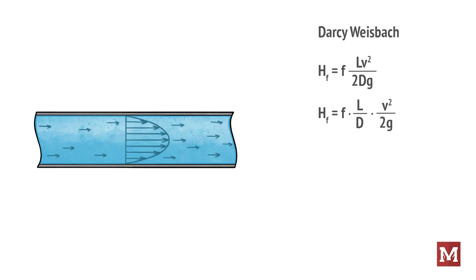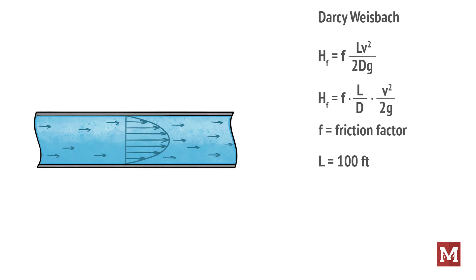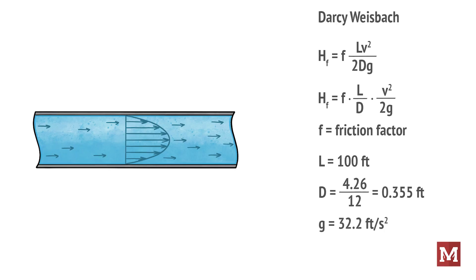In this example we don't know the friction factor. The length of the pipe is 100 feet. The diameter of the pipe is taken as 4.26 inches divided by 12 inches or 0.355 feet. Gravitational constant is 32.2 feet per second squared.